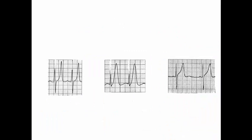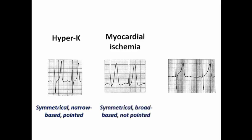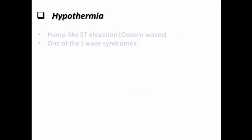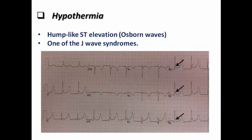The T wave in hyperkalemia is symmetrical, narrow, and sharply pointed at its peak. In contrast, the hyperacute T wave in myocardial ischemia is symmetrical but broad-based and not pointed, while a normal T wave is asymmetrical and not narrow. In hypothermia, the characteristic ECG feature is a hump-like ST elevation known as the Osborne wave — this is a spot diagnosis explaining why hypothermia is classified as a J-wave syndrome alongside Brugada and early repolarization.